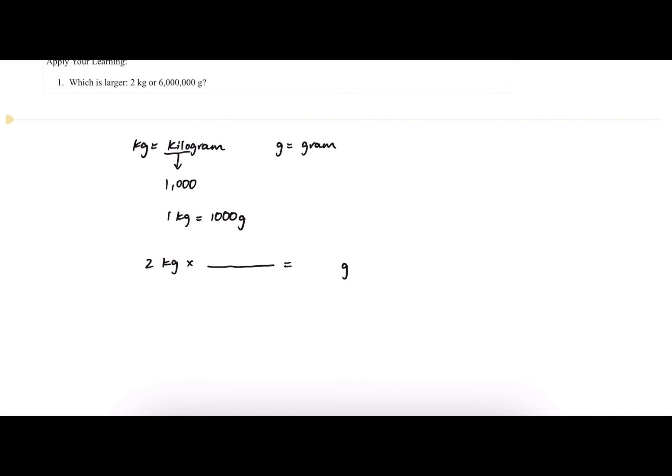To cancel out a unit, we want to put it on the opposite side. So since kilograms is in the numerator in the first number, we want it in the denominator of the second number.